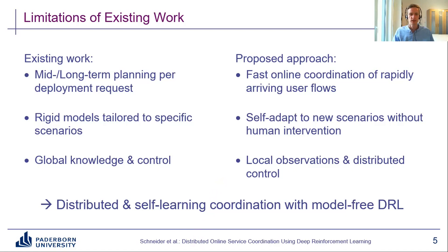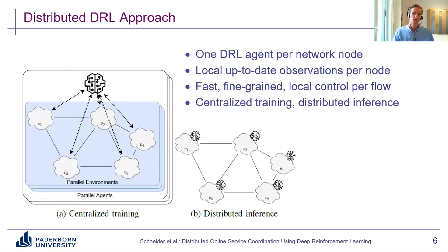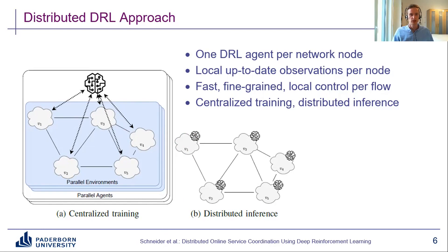Overall, we propose distributed self-learning coordination with model-free deep reinforcement learning. The main idea is that instead of one central DRL agent that observes and controls the entire network, we have multiple separate DRL agents working in parallel — specifically one DRL agent per network node. Each agent has only local but up-to-date observations of what's going on at that node and its direct neighborhood, and makes fast, fine-grained, per-flow control decisions. We train this DRL approach in an offline centralized manner, collecting experience from all nodes to train a shared neural network efficiently. For production, we deploy copies of this trained neural network at each node, performing inference in a distributed fashion independently without any extra communication.